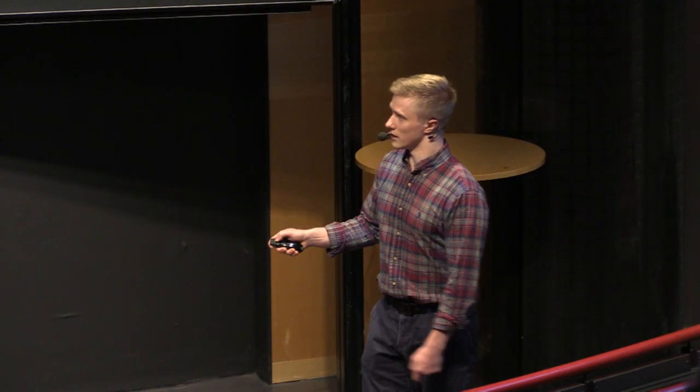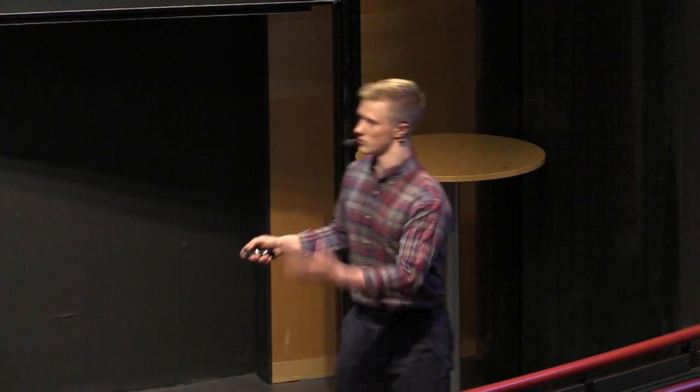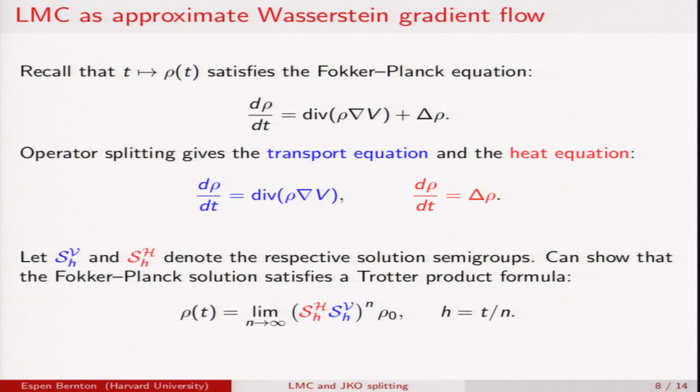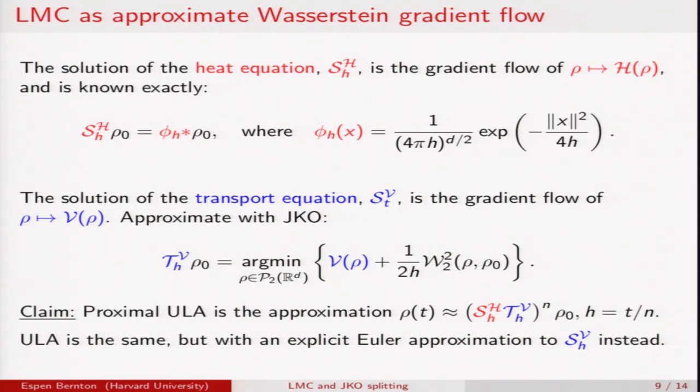Indeed, in the limit where the time step goes to zero and the number of iterations or compositions goes to infinity, it's possible to show that indeed you recovered the Fokker-Planck solution. So let's look at these two equations a little more carefully. The heat equation can be shown to be the gradient flow of the entropy functional in this Wasserstein sense, and it's known exactly. So it corresponds just to convolution with the Gaussian kernel. On the other hand, the transport equation can be shown to be the gradient flow of the potential energy function. We can approximate it with the JKO step. And that's what this operator T here does.